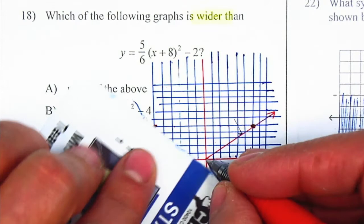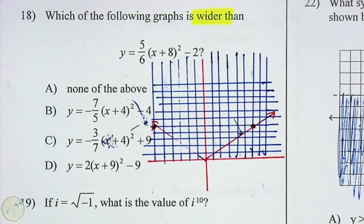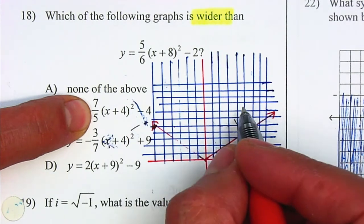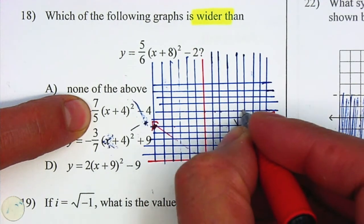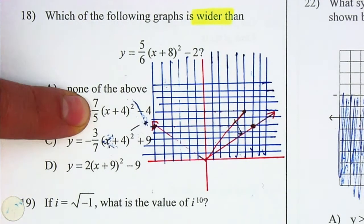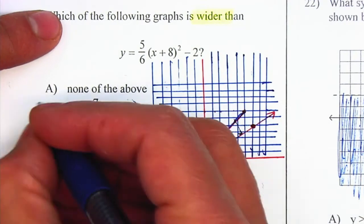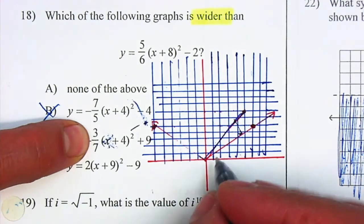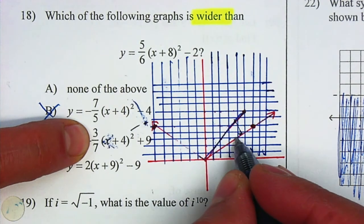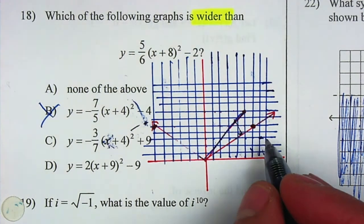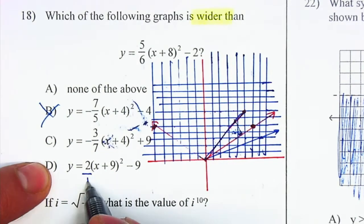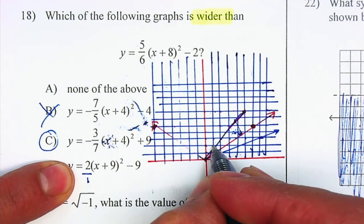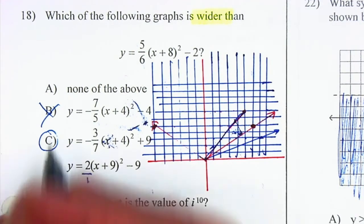I'm looking for one that is wider. This one — even though it's negative, we're going to place it up to the right to compare — is up 7 to the right 5. Is that one wider? No, that one's going to be narrower. We have up 3 to the right 7, so there's one that is wider. Up 2 to the right 1 is not going to be wider; it's going to be slightly narrow. So your answer will be letter C.